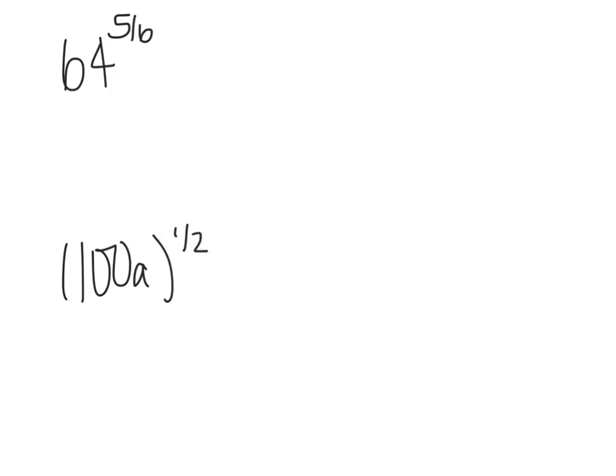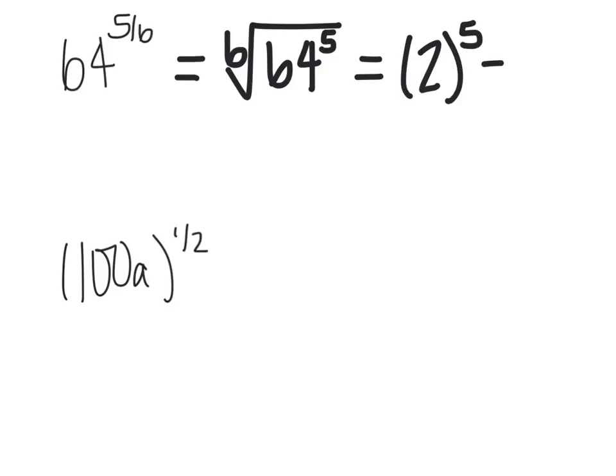If I have 64 to the 5 sixth, that's the same thing as saying the sixth root of 64 to the fifth power. Well, the sixth root of 64 is actually 2, and 2 to the fifth power is going to give us 32. So again, what was on the denominator became my index, became my root, and what was my numerator was my exponent there.